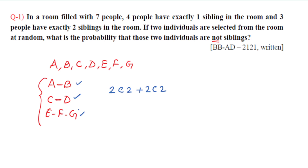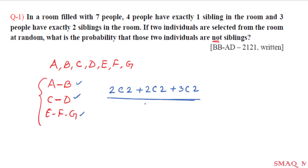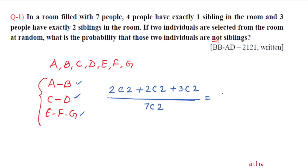So we have two siblings, plus 3C3, where plus means or, divided by the total possible outcome which is 7C2. We have 2C2 which means 1, and 3C2 which means 3, divided by 7C2 which equals 7 times 6 divided by 2.